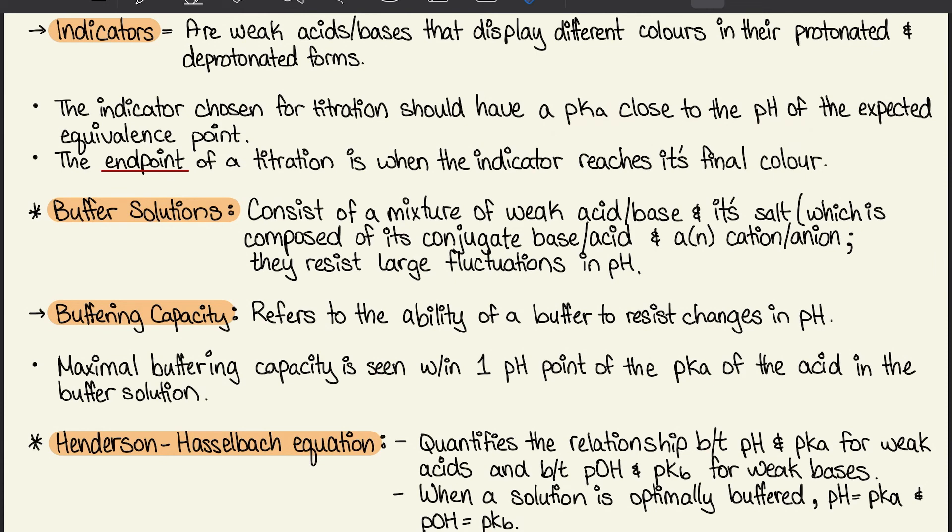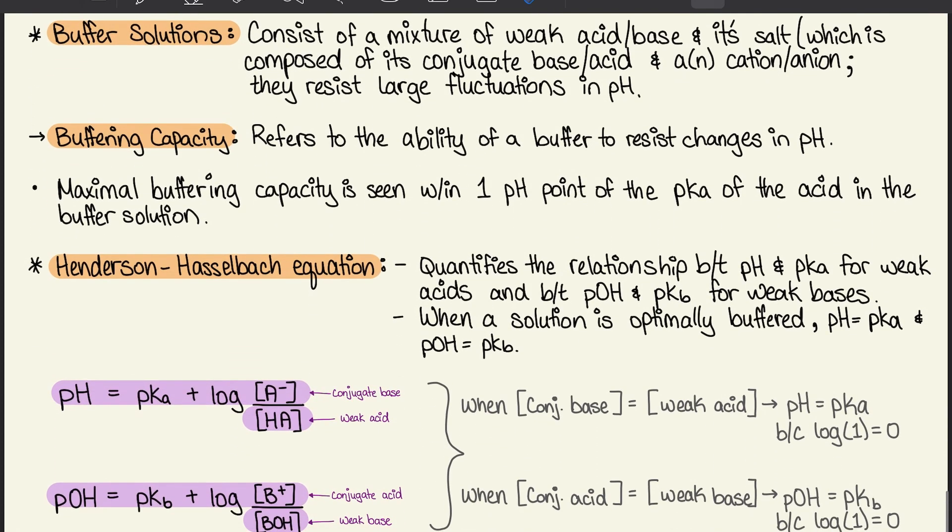The endpoint of a titration is when the indicator reaches its final color. Buffer solutions consist of a mixture of weak acids or bases and its salt, which is composed of its conjugate base or acid and an anion or cation. They resist large fluctuations in pH.